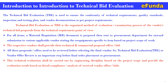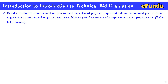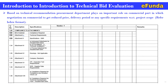This technical evaluation shall be carried out by the Engineering Discipline, based on the project scope, and provides the evaluation result based on detailed compliance analysis of the received vendor offers. The Technical Bid Evaluation will provide a recommendation on a vendor offer, whether offers are technically acceptable or not, and this is how the compilation will be done in the Technical Bid Evaluation. We will see further details in our next slides. Based on the technical recommendation, the Procurement Department plays an important role on the commercial part, in which negotiation on commercial terms is done to get reduced price, delivery period, or any specific requirement with respect to project scope. One can refer to the format where the Technical Bid Evaluation will be done for vendor offers, and the format can be seen that corresponds to all the attachments of the material requisition.